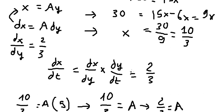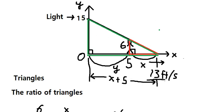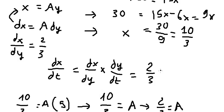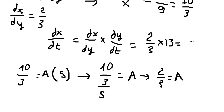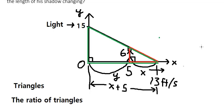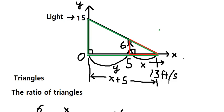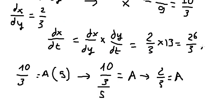dY/dt is 13 feet per second. So dS/dt equals 2/3 times 13, which equals 26/3 feet per second.